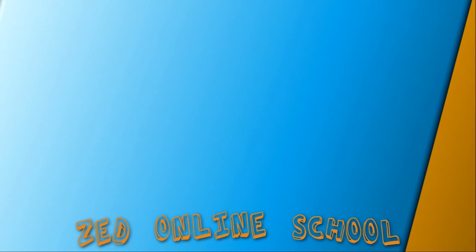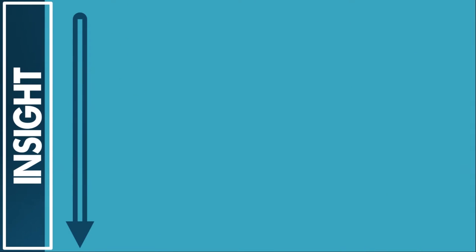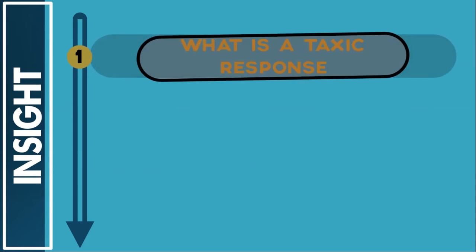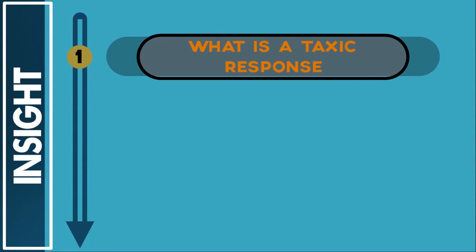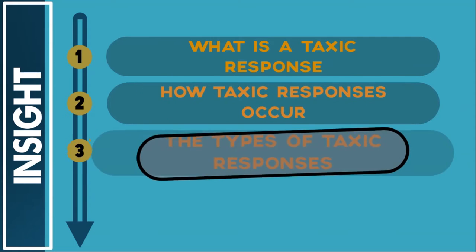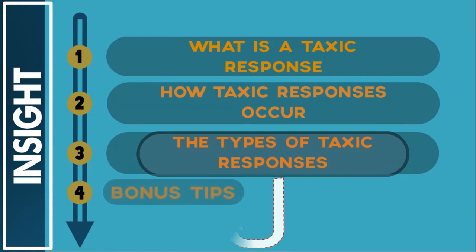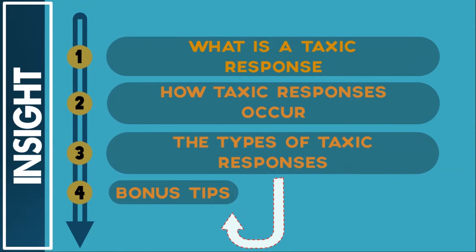This is Z Online School and in this video you and I are going to be understanding taxism. We're going to do this in a systematic way and by the end of this video you should be able to know what a taxis response is, how taxis responses occur, the types of taxis responses — and we've got some bonus tips for you at the end, so make sure you watch till the end to get maximum value out of it.